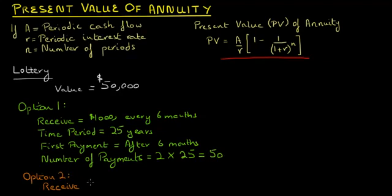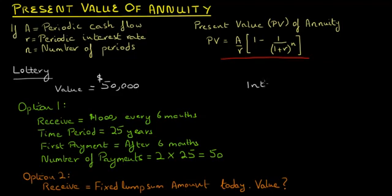The second option is to receive a fixed lump sum amount today. The question is, what value of this fixed lump sum amount today would leave you indifferent between the two options if the interest rate equals 10% per annum?